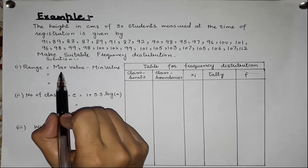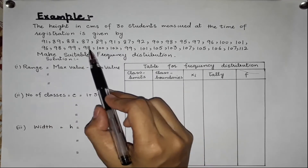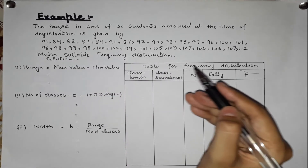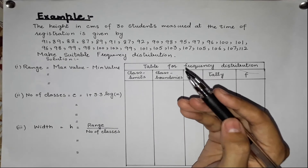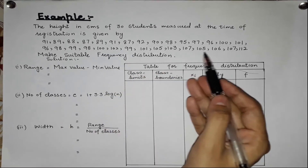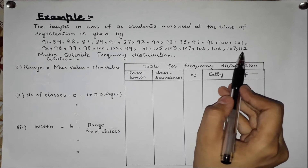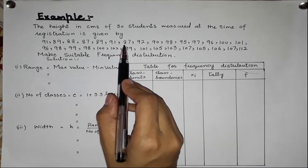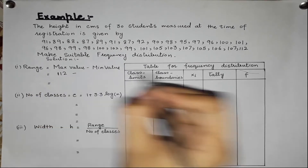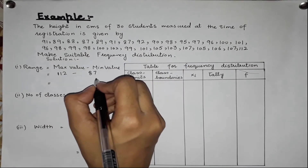First of all, we have to find the range. The formula is: maximum value minus minimum value. First we arrange the data in ascending order, then we find the minimum and maximum values. The maximum value is 112 and the minimum value is 87. So the range is 112 minus 87, which equals 25.